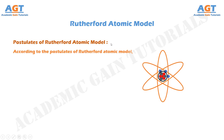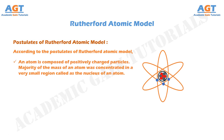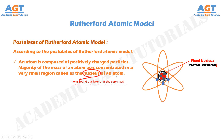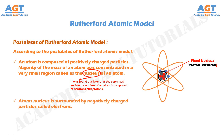According to the postulates of Rutherford's atomic model, an atom is composed of positively charged particles. The majority of the mass of an atom is concentrated in a very small region called the nucleus of an atom. It was found that the very small and dense nucleus is composed of neutrons and protons. The nucleus is surrounded by negatively charged particles called electrons.